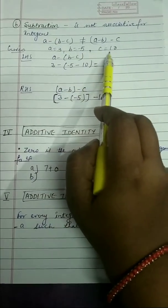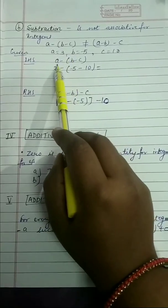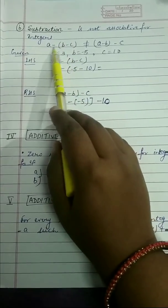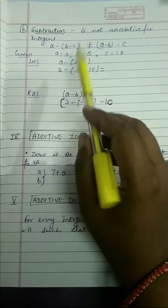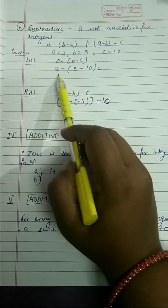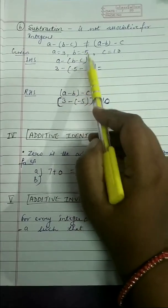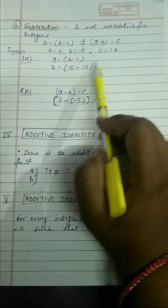A is 3, B is minus 5, and C is 10. Now for the left-hand side, A minus (B minus C), the value of A that we put here is 3.